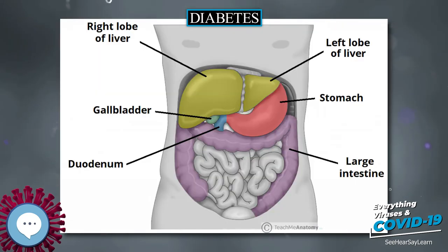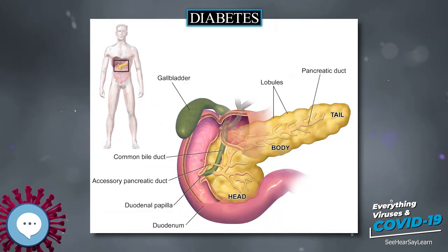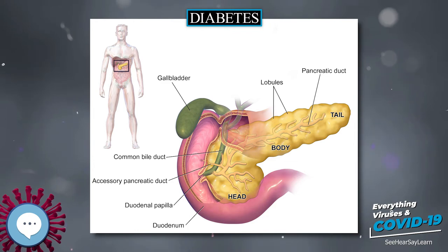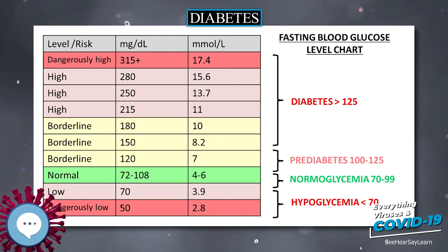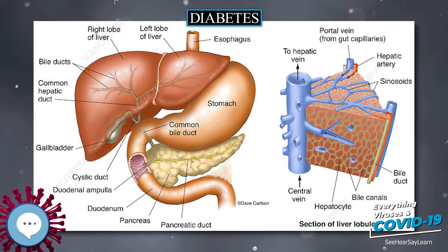Rapid breathing, sweating, and cold, pale skin are characteristic of low blood sugar but not definitive. Mild to moderate cases are self-treated by eating or drinking something high in sugar. Severe cases can lead to unconsciousness and must be treated with intravenous glucose or injections with glucagon.